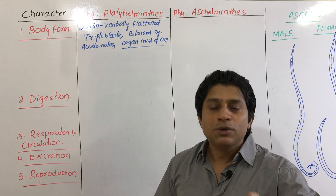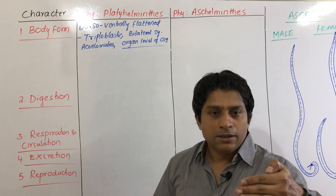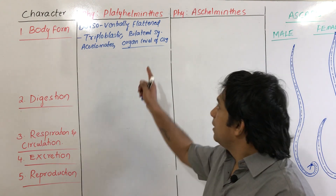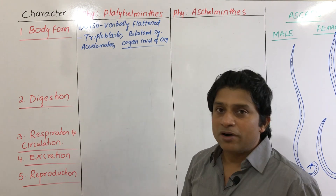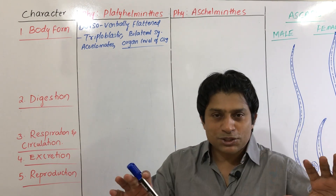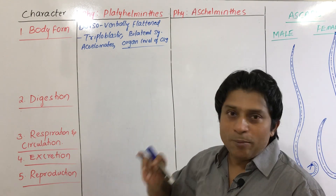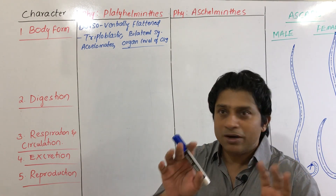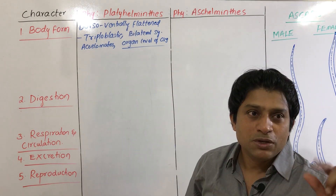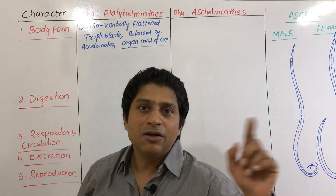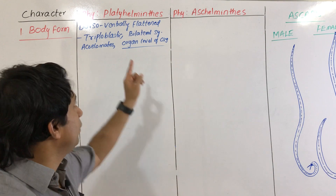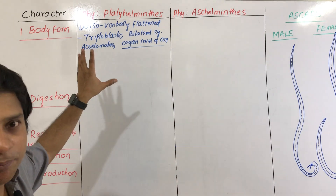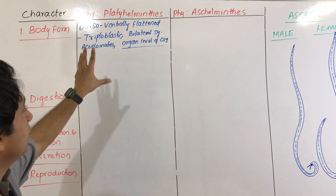This is a higher organization compared to poriferans and cnidarians, which have cellular and tissue level organization. Platyhelminthes are the first animals with organ level of organization — triploblastic, bilaterally symmetrical, acoelomates with organ level of organization, dorsoventrally flattened body.